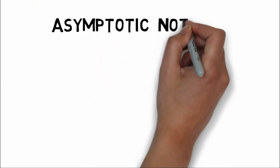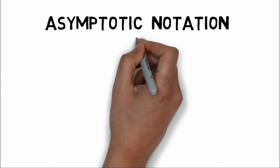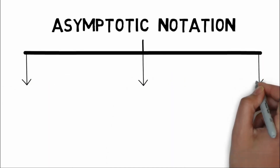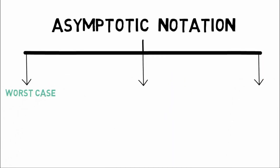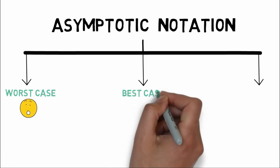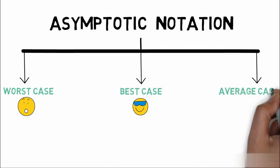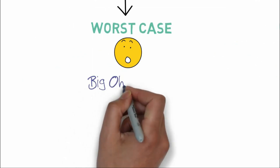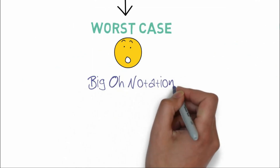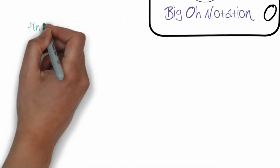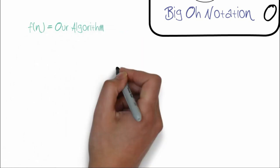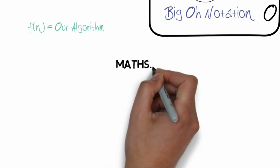Time complexity uses asymptotic notation. The asymptotic notation represents a worst case. The worst case is expressed using big O notation.